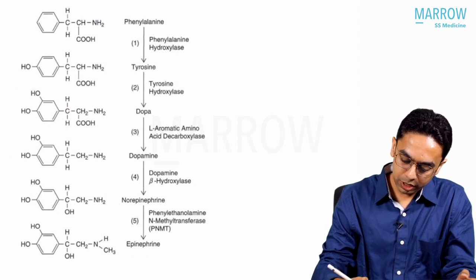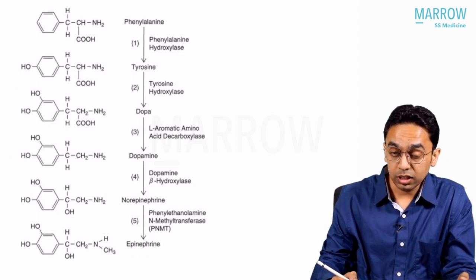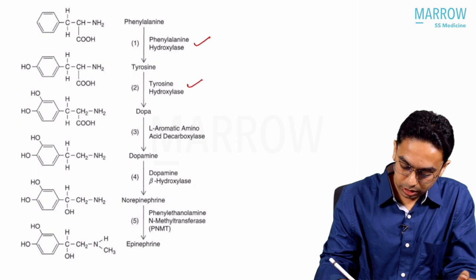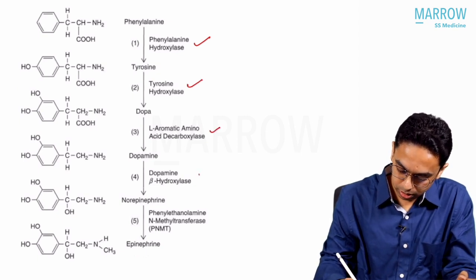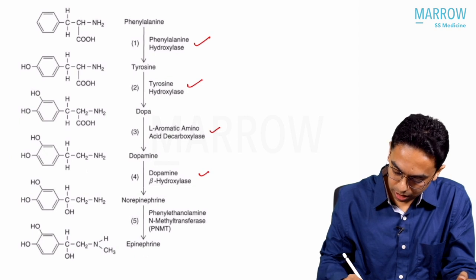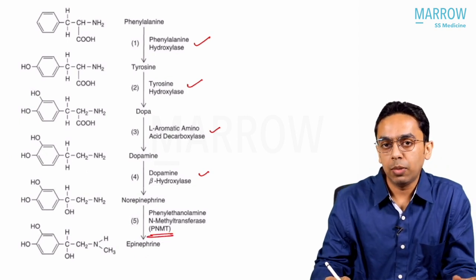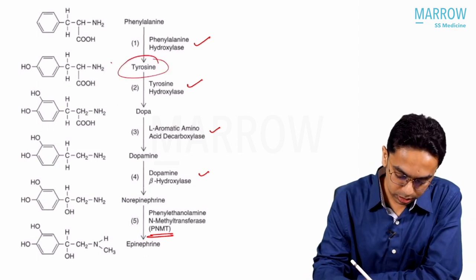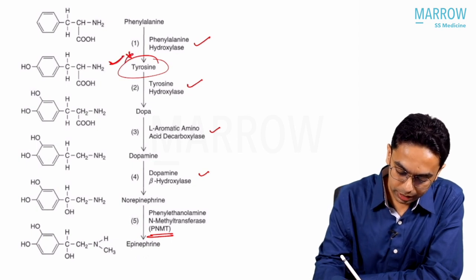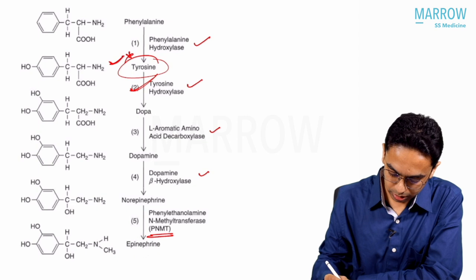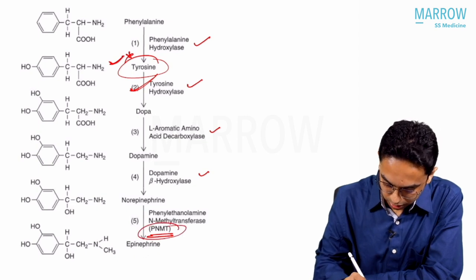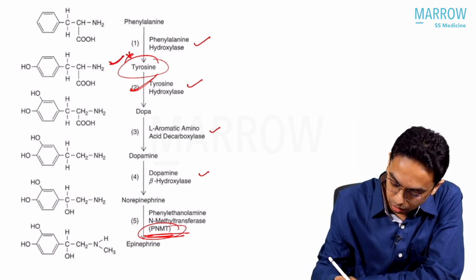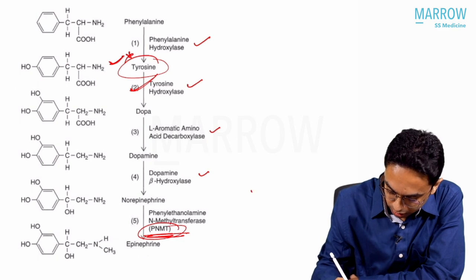The pathway goes: from phenylalanine we get tyrosine, then DOPA, dopamine, norepinephrine, and then epinephrine. The enzymes are phenylalanine hydroxylase, tyrosine hydroxylase, DOPA decarboxylase, dopamine beta-hydroxylase, and PNMT. A common question asks which amino acid is in this pathway — the answer is tyrosine. The rate-limiting step is also asked. PNMT (phenylethanolamine N-methyltransferase) is present only in the adrenal.